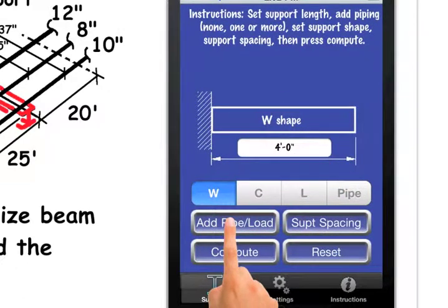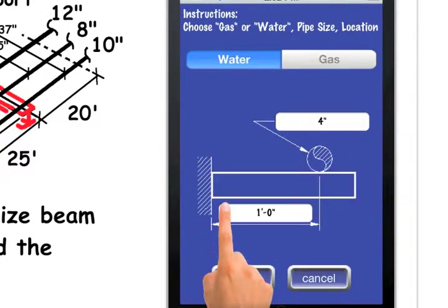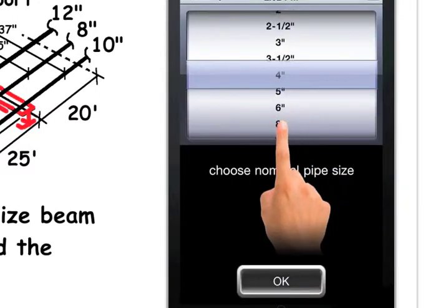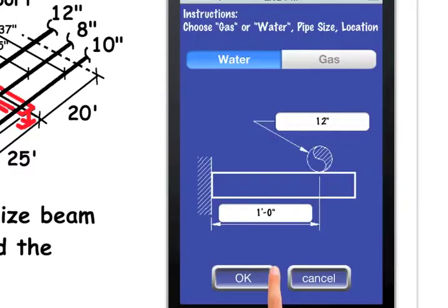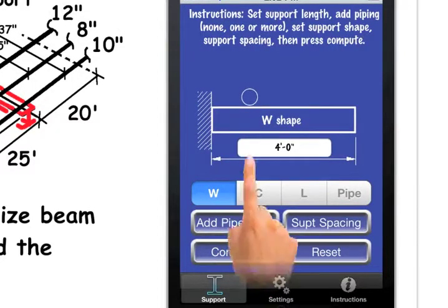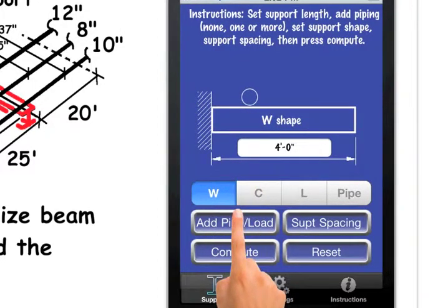I will then add the piping working from inside to outside. First with the 12 inch pipe, one foot from the edge. The pipe is now indicated on the pipe support.